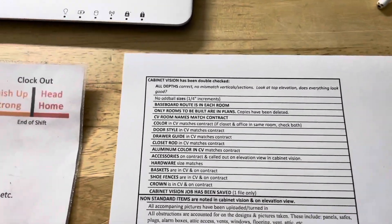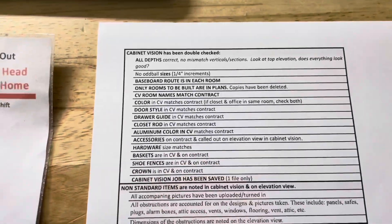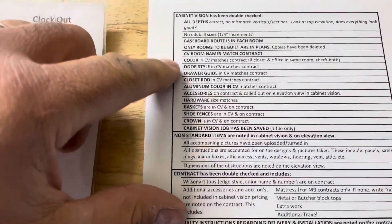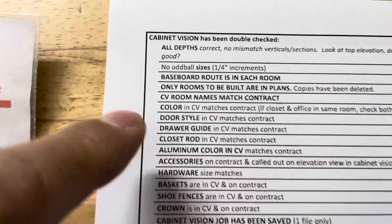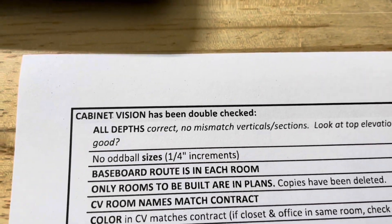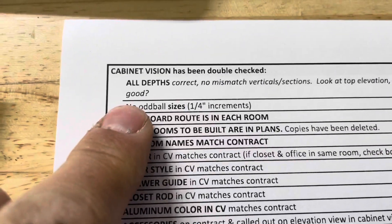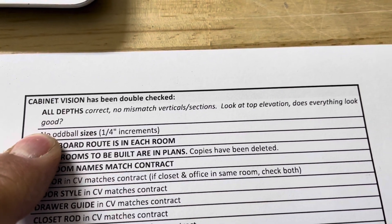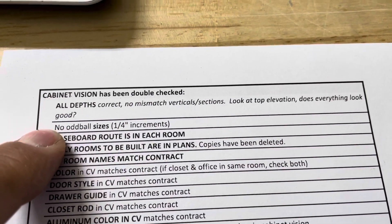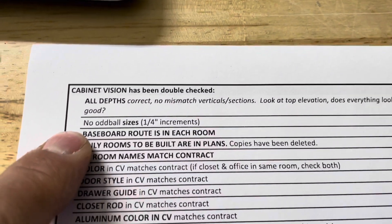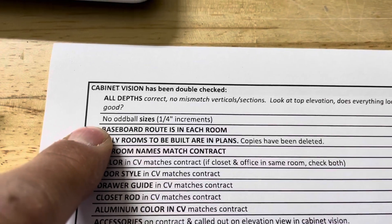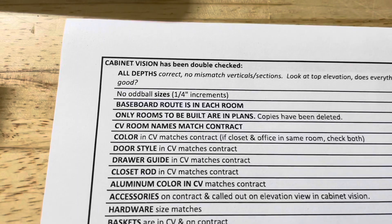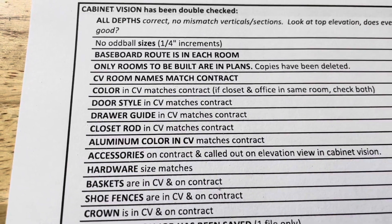This is one for our designers. They're not going down this on every job, but when we start missing things we're able to go back to it. Our cabinet vision has been double-checked, all the depths are the same size, everything matches. It's a checklist — not detailed instructions. There are no oddball sizes in quarter-inch increments, the base route is in each room, all of that stuff is included.